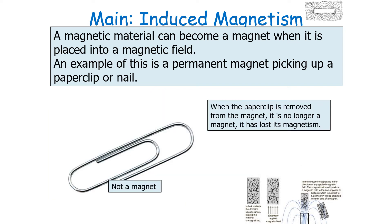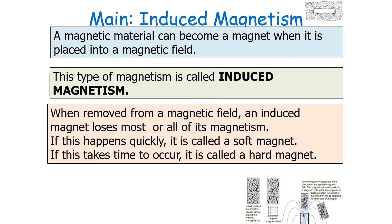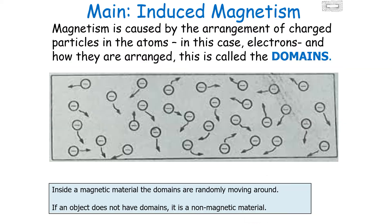When the paper clip is removed from the permanent magnet — taken out of its magnetic field — it is no longer a magnet; it has lost its magnetism. For an induced magnet, when it's removed from a magnetic field, it will lose most or all of its magnetism. If this happens quickly, we call it a soft magnet, and if this takes a long time to occur, we call it a hard magnet.